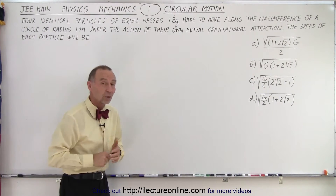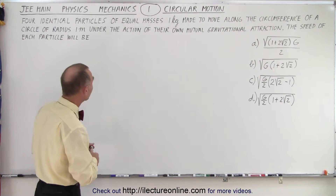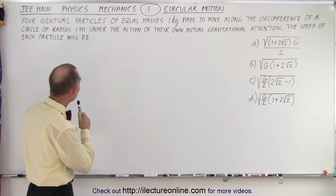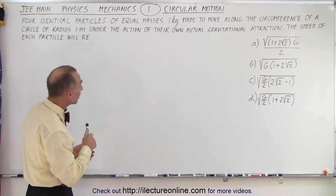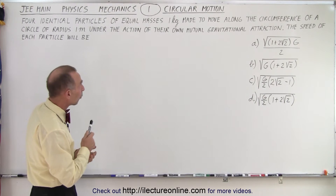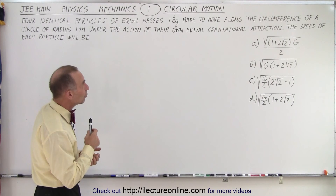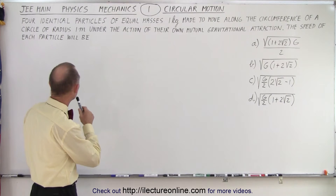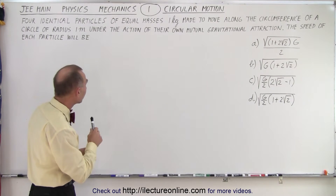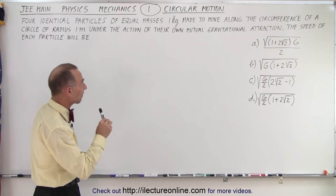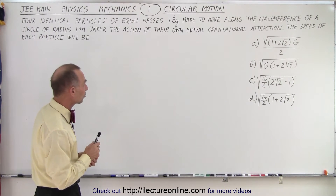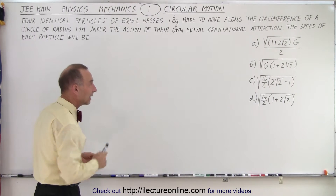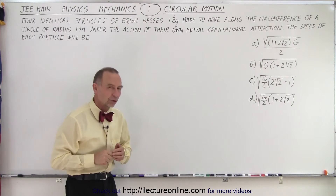It's a mechanics question. It deals with circular motion. So let's read the question: Four identical particles of equal masses — one kilogram — are made to move along the circumference of a circle of radius one meter under the action of their own mutual gravitational attraction. The speed of each particle will be — and they give us four choices.